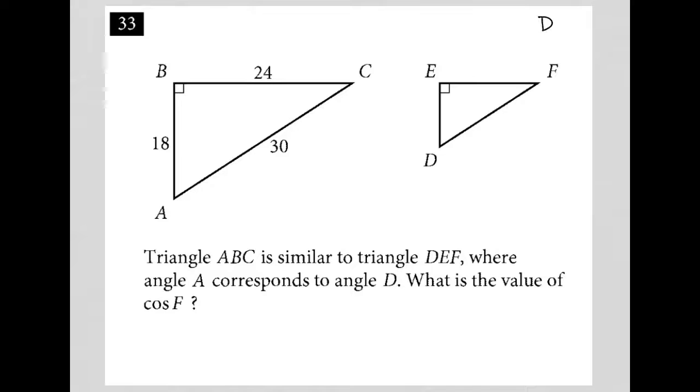So this question is a diagram question. We have two triangles, two right triangles, in fact. The question says that triangle ABC is similar to triangle DEF.